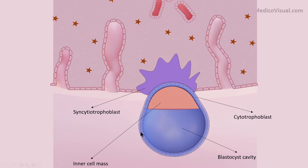The trophoblast has been divided into two parts. The one that consists of no clear-cut boundaries with lots of nuclei embedded into it is called syncytiotrophoblast, while the other part that consists of clear-cut cellular boundaries is called cytotrophoblast.